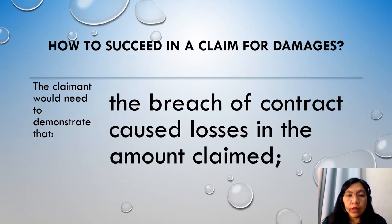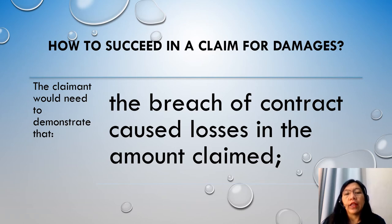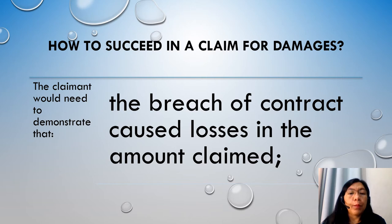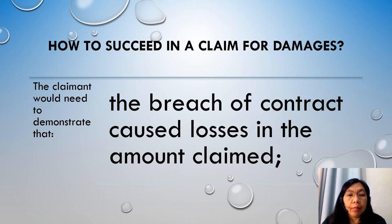According to the principles of the law of contract, the claimant must first demonstrate that the breach of contract caused the losses in the amount claimed. In English law, the purpose of an award of damages for breach of contract is to compensate the injured party for the loss, rather than to punish the wrongdoer. That is why we do not refer to liquidated damages as a penalty. The general rule is that damages should place the claimant in the same position as if the contract had been performed without the breach, so far as a monetary award can do this.